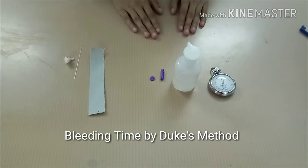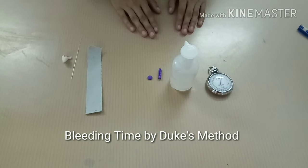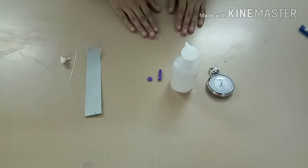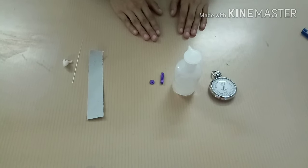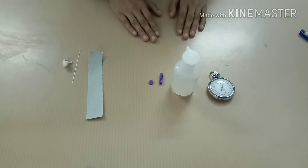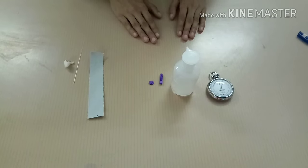Let us perform bleeding time by Duke's method. A deep puncture on skin is made and the length of time required for bleeding to stop is recorded.